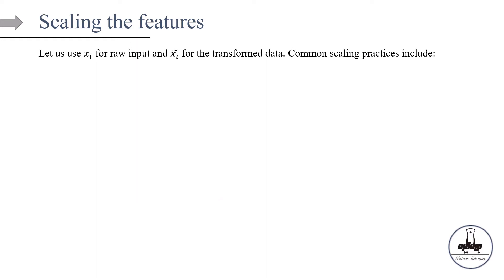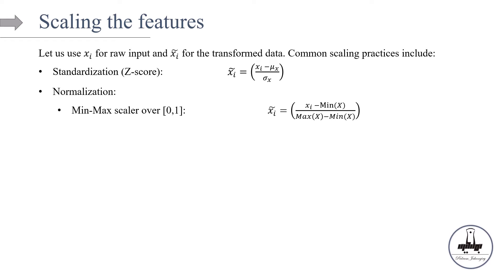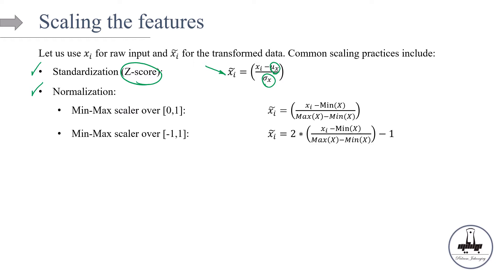Now let's see how we can scale the features. The most common scaling practices are standardization and normalization. Standardization, also known as the z-score, involves subtracting the average and dividing by the standard deviation of the random variable. For normalization, we can use either a min-max scaler over the range 0 to 1, or over the range -1 to 1.